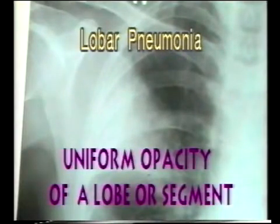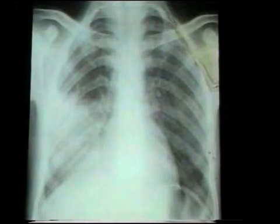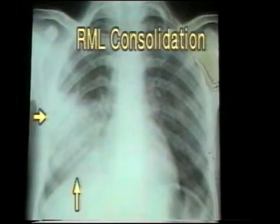Note the uniform opacity restricted to a single segment. This X-ray shows a uniform opacity of the right lower zone. The opacity merges with the heart shadow, hiding the heart border, indicating that it is in the right middle lobe. Note that it is bounded above by the transverse fissure, which is in its normal location. There is no displacement of the diaphragm or the mediastinum as would occur in a collapse. This is a consolidation of the right middle lobe due to lobar pneumonia.